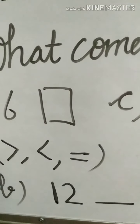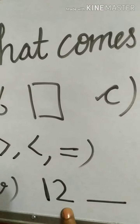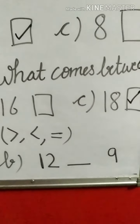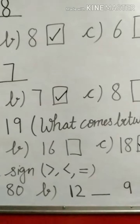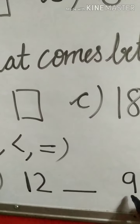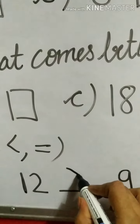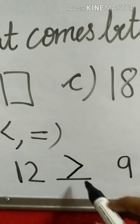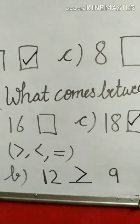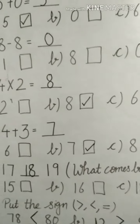In part B, the numbers are 12 and 9. Here 12 has two digits and 9 has only one digit. You can count: one, two, three, four, five, six, seven, eight, nine — 9 comes earlier in counting, so 9 is smaller. The mouth of the sign opens towards the bigger number, which is 12, so we write 12 greater than 9. This is how we represent which number is greater and which is smaller.